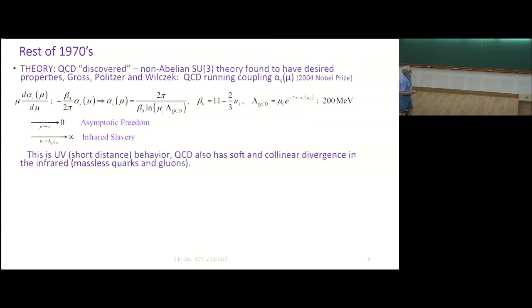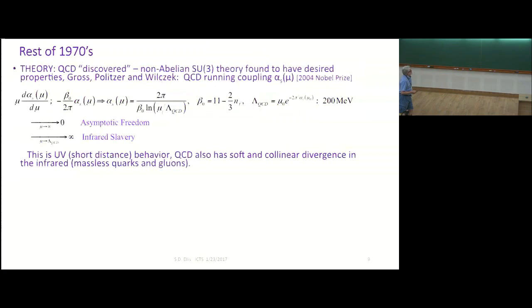The thing about lead glass is if you put it in a high radiation zone, it ages, and their efficiencies went to pot. When they understood what was going on, the cross-section didn't go like S squared, it went like S to the 4.12. It was fun while it lasted.